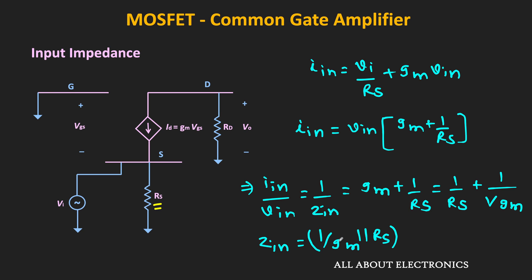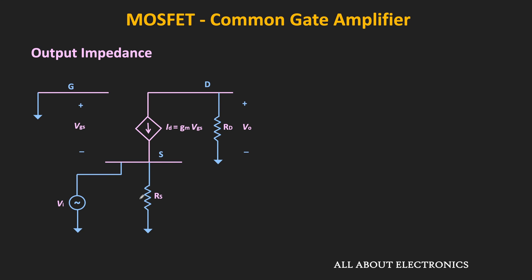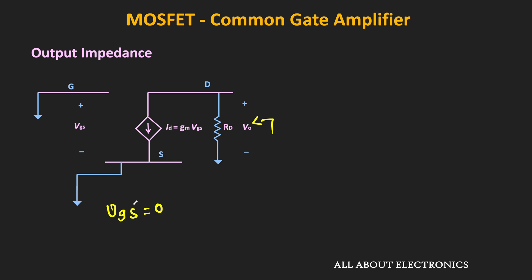Now let us find the output impedance and determine whether the source resistor RS has any impact. The output impedance is the Thévenin equivalent seen from the output with all independent sources set to zero. Setting the input signal to zero causes the source resistor to act as a short circuit. Gate and source are then at the same potential, Vgs = 0, Id = 0, and the dependent current source acts as an open circuit. The output impedance remains equal to Rd — the source resistor has no impact on the output impedance.